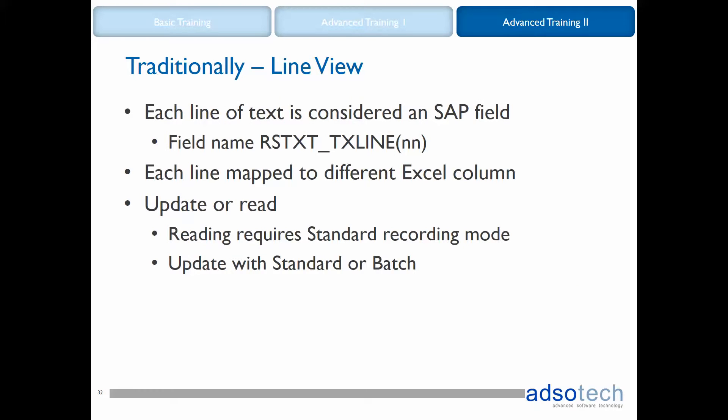Using the line view, each line of text is considered a separate SAP field and they need to be mapped to separate Excel columns. The generated SAP fields are identified with a row number in brackets at the end of the technical field name. Funnily enough, the numbering starts from 2 instead of 1 — so [02] in brackets means row 1 and [03] means row 2. You can update the text using batch or standard modes, but if you wish to read the text, you need standard recording mode.